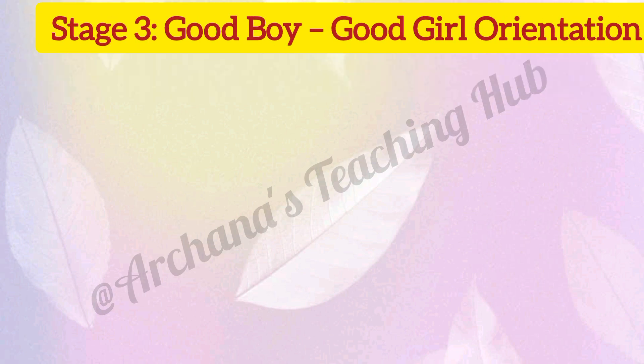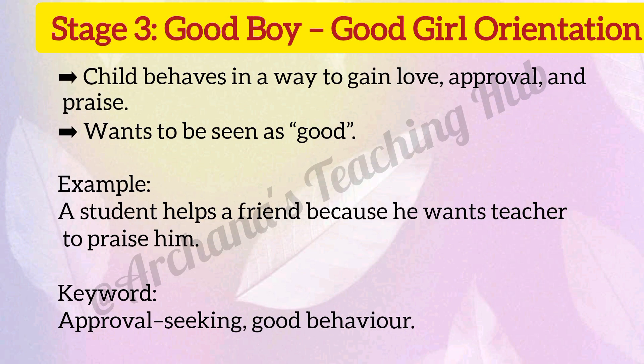Stage 3: Good boy, good girl orientation. The child behaves in a way to gain love, approval, and praise. Wants to be seen as good. For example, a student helps a friend because he wants the teacher to praise him. Keyword: approval-seeking good behavior.